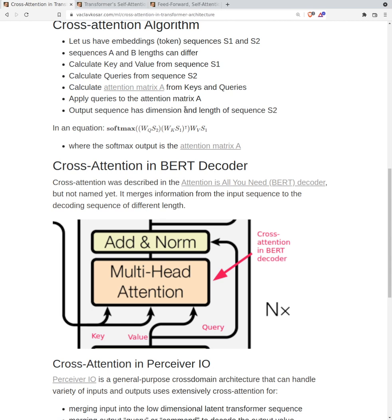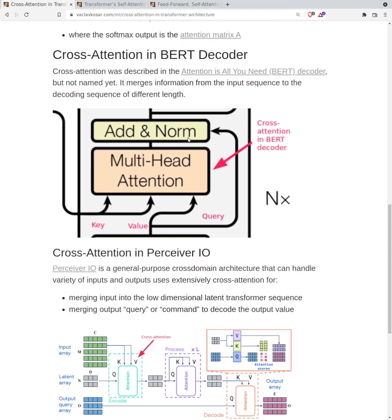Then we calculate the attention matrix from keys and queries, and apply values to the attention matrix A. The output sequence has dimensionality we can choose. The way we calculate this is described in the equation. The softmax output is the attention matrix.